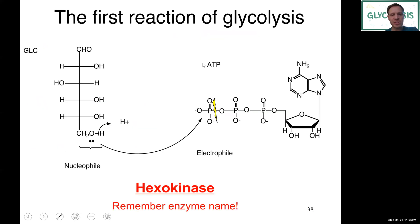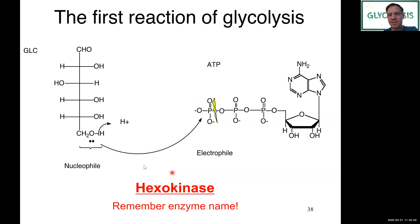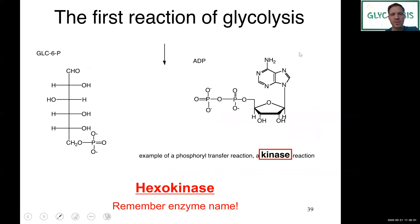Going back to our reaction, we can now understand how it works. The attack of the hydroxyl group as a nucleophile on the phosphorus group as an electrophile facilitates cleavage of the phosphoanhydride bond and attachment of the phosphoryl group to the alcohol of glucose, making glucose-6-phosphate. The enzyme that does this is hexokinase — a kinase that uses hexoses as substrates. A kinase is an enzyme that facilitates phosphorylation, importantly using ATP as the donor of the phosphoryl group. The result is glucose-6-phosphate and ADP.